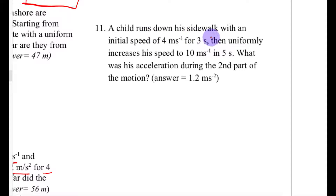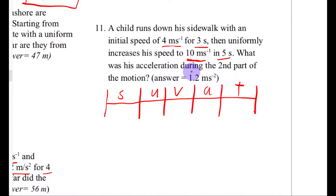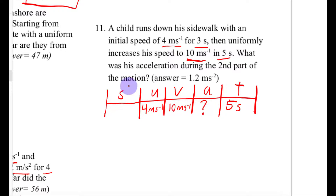Number eleven: a child runs down a sidewalk with an initial speed of 4 meters per second for 3 seconds, then uniformly increases his speed to 10 meters per second in 5 seconds. What was his acceleration during the second part of his motion? We only care about the second part: the time is 5 seconds, starting speed is 4 meters per second, final velocity is 10 meters per second, and we're finding acceleration — we don't care about displacement.